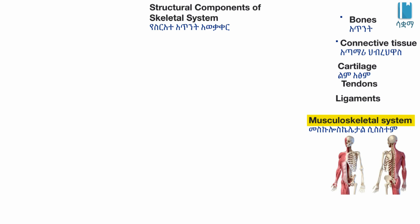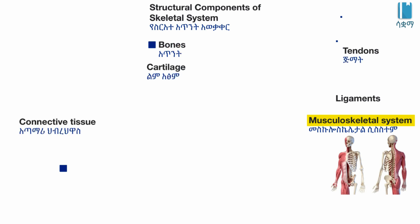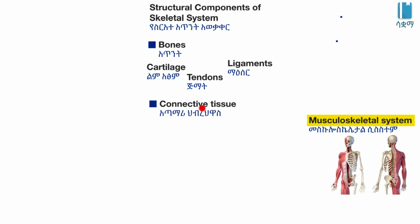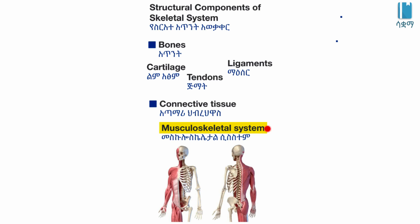This is the first part of the skeletal system. The skeletal system is the framework of bones in the body. The ligaments are connected to connective tissues and maintain good condition. The skeletal system is an important part of the body.